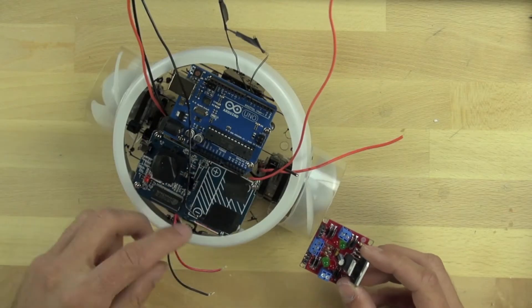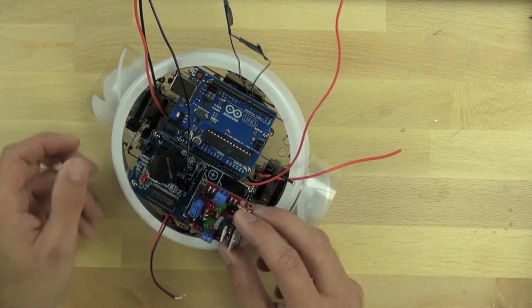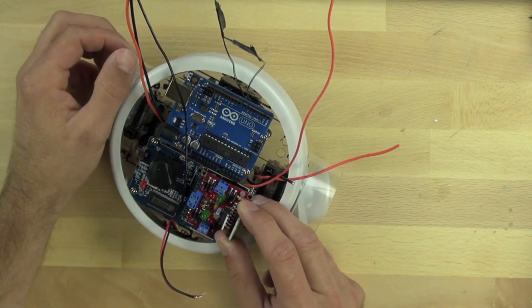We're going to wire up our L298 motor controller and position it right on top of the camera where the batteries would normally go.